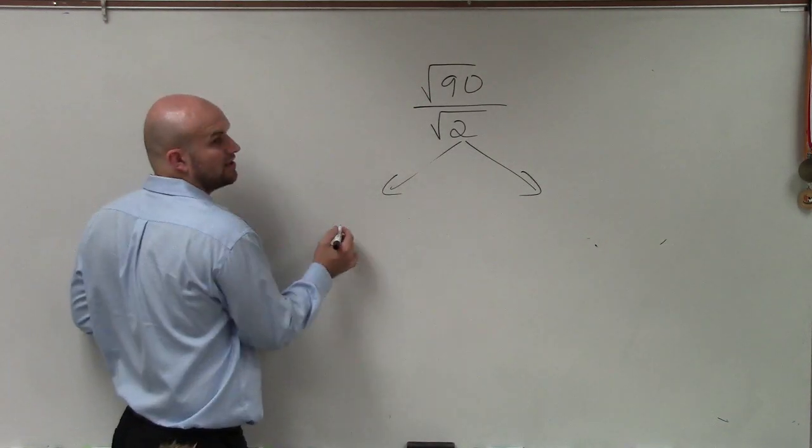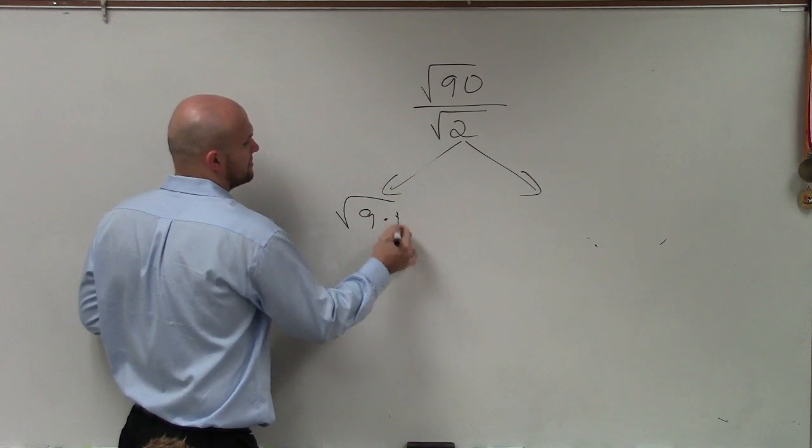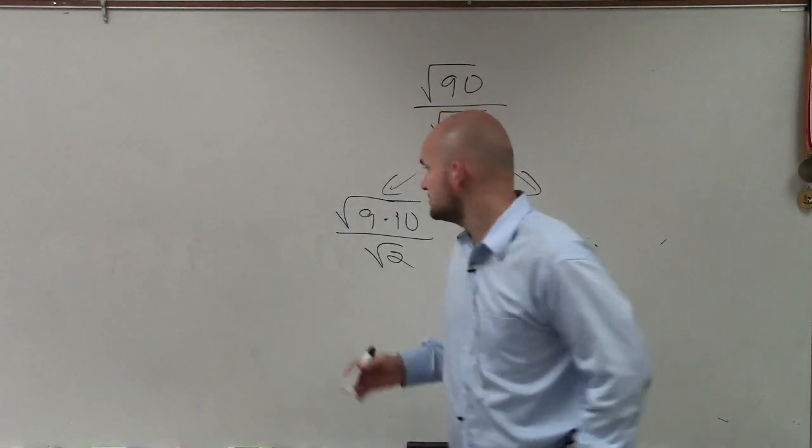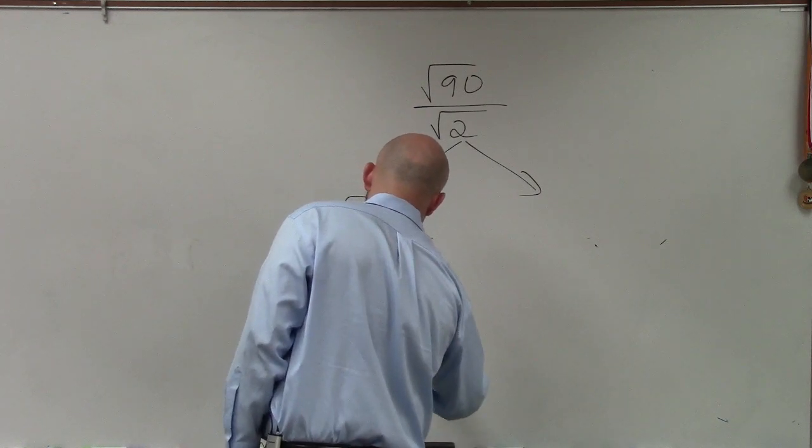Well, how do I simplify the square root of 90? I can rewrite that as the square root of 9 times 10 over the square root of 2. Right? So that becomes 3 square root of 10 over the square root of 2.